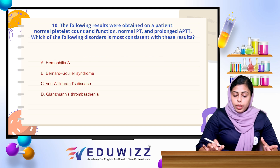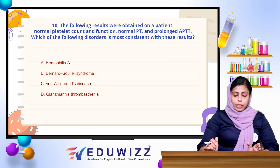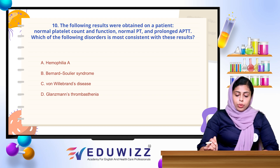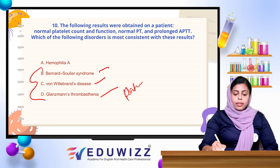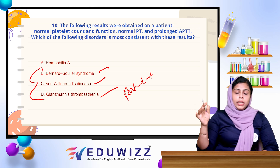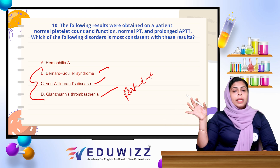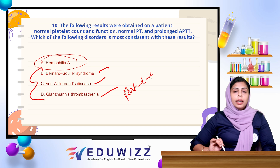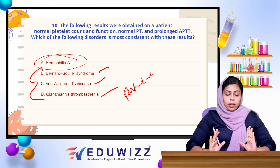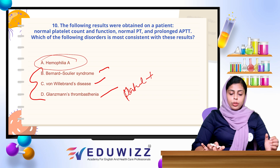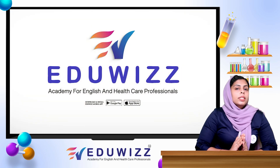Next question: the following results were obtained — normal platelet count and function, normal PT, and prolonged APTT. Which disorder is most consistent with these results? There are three disease categories: platelet disorders, in which APTT is normally prolonged. When PT is normal and APTT is prolonged and platelets are normal, this is mainly due to hemophilia. The answer is hemophilia A. This concludes 10 questions.